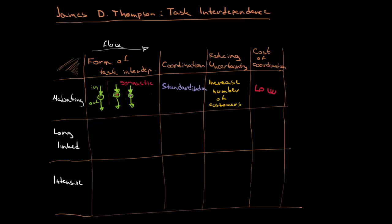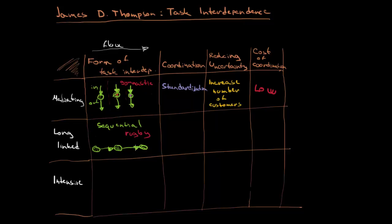Now we move to the long-linked type of technology. The flow of the product in the company is going to be sequential. Imagine rugby: there is a defensive player that begins, then an intermediary, and finally an offensive player — this happens in a sequence. The performance of the first member in the sequence influences all the others and ultimately the whole performance.